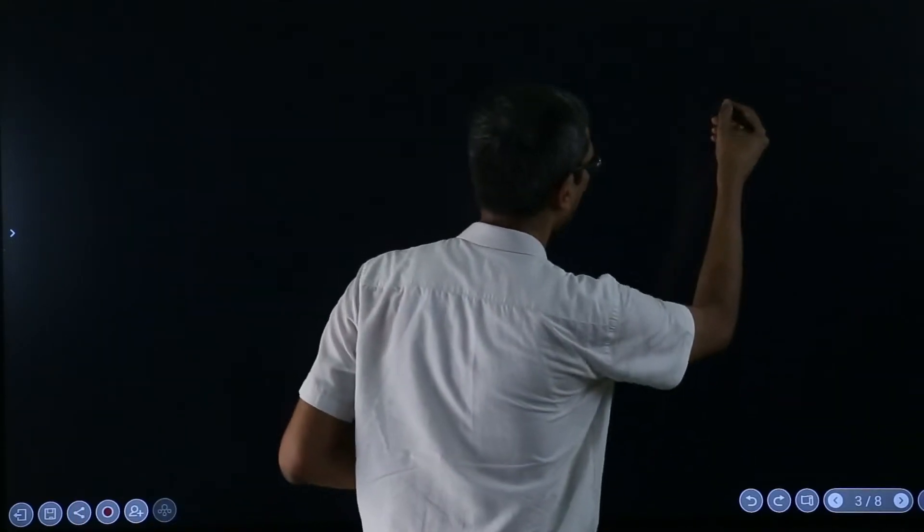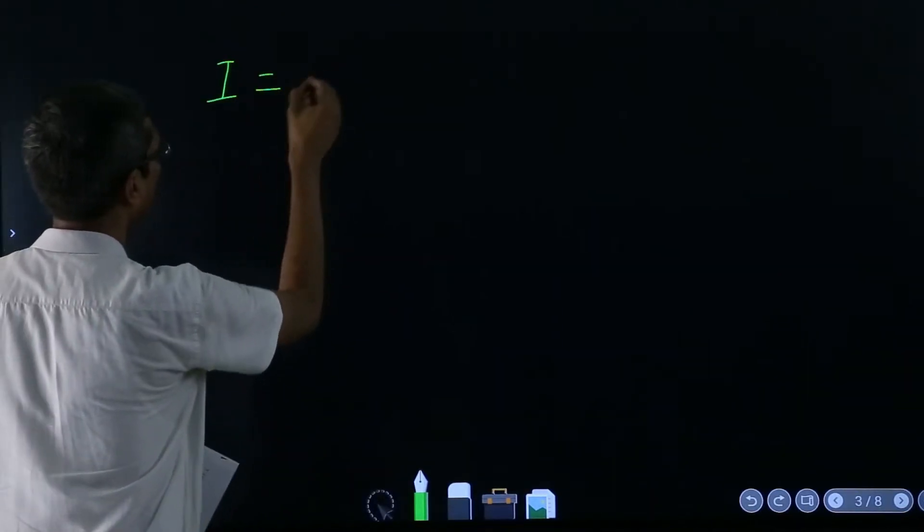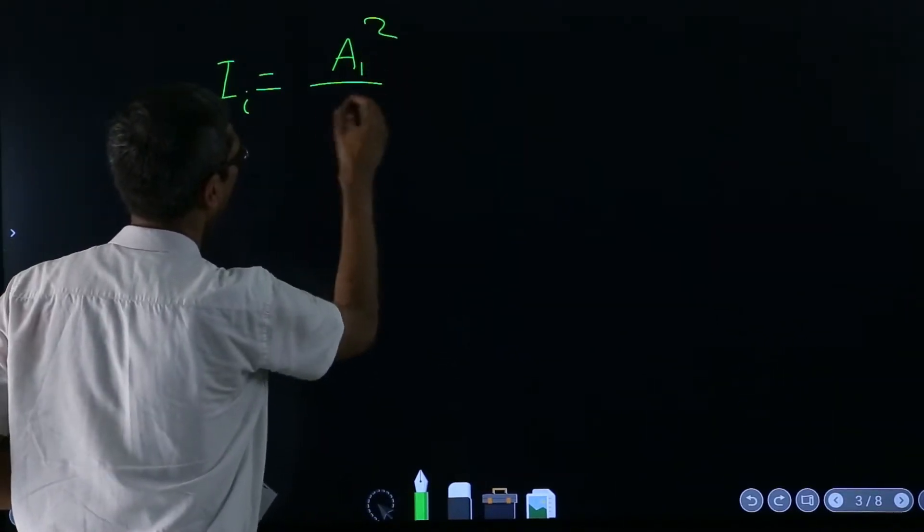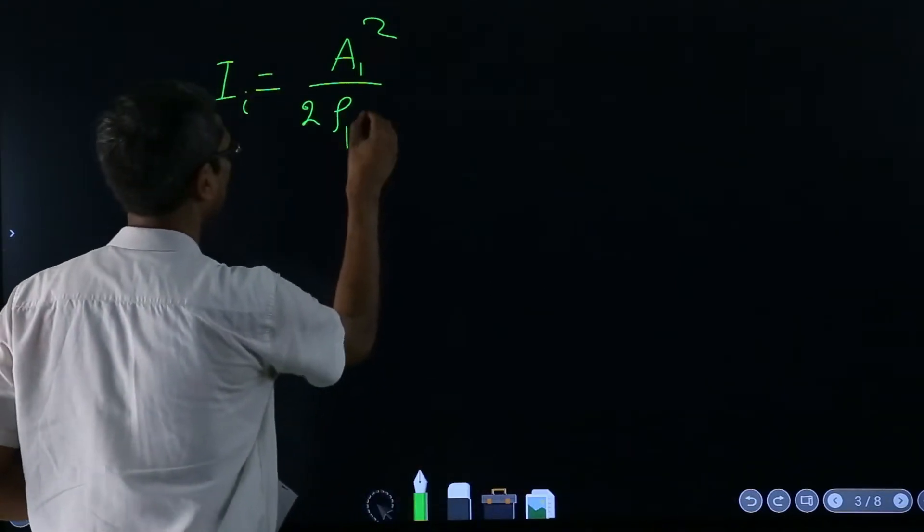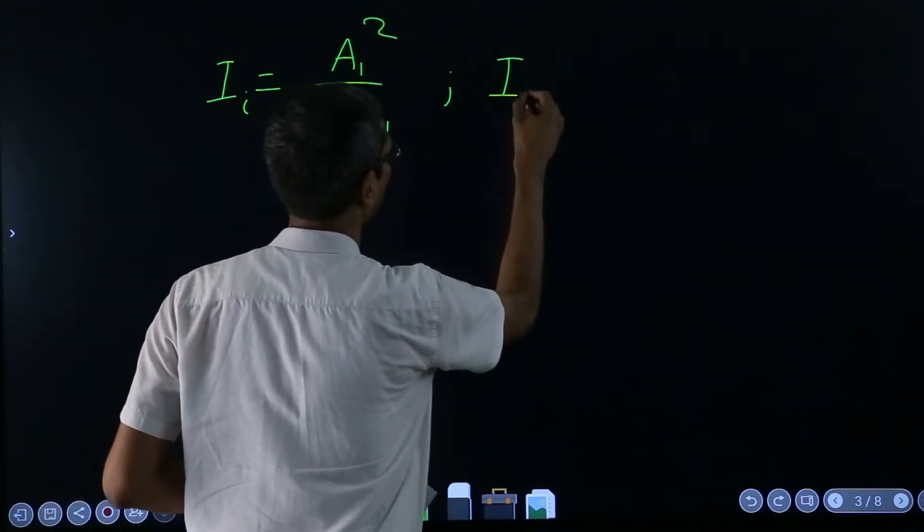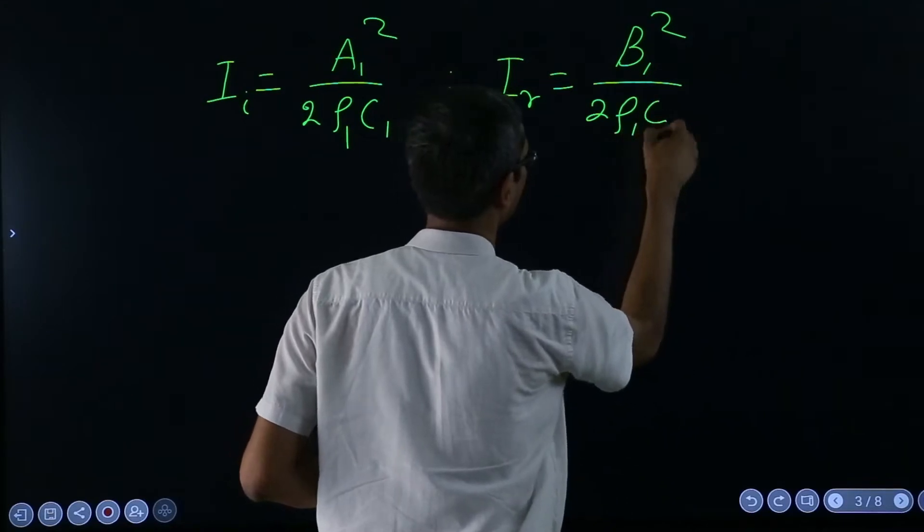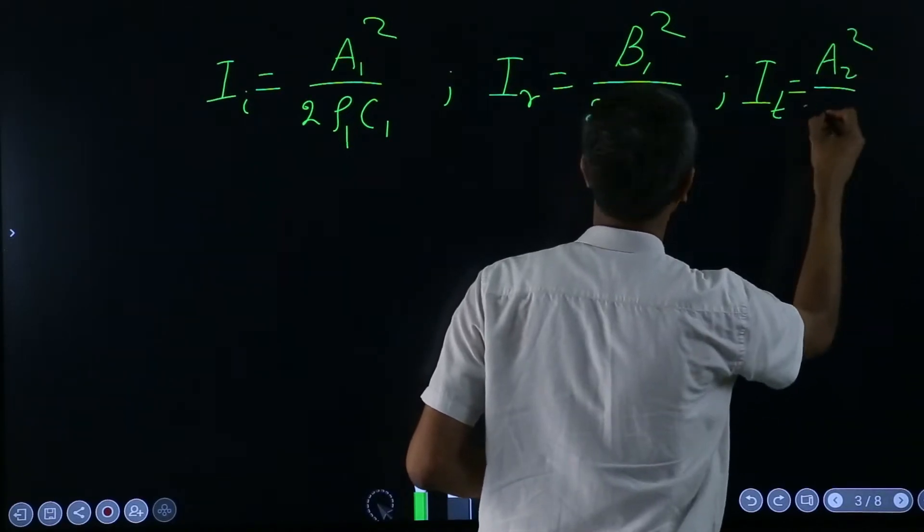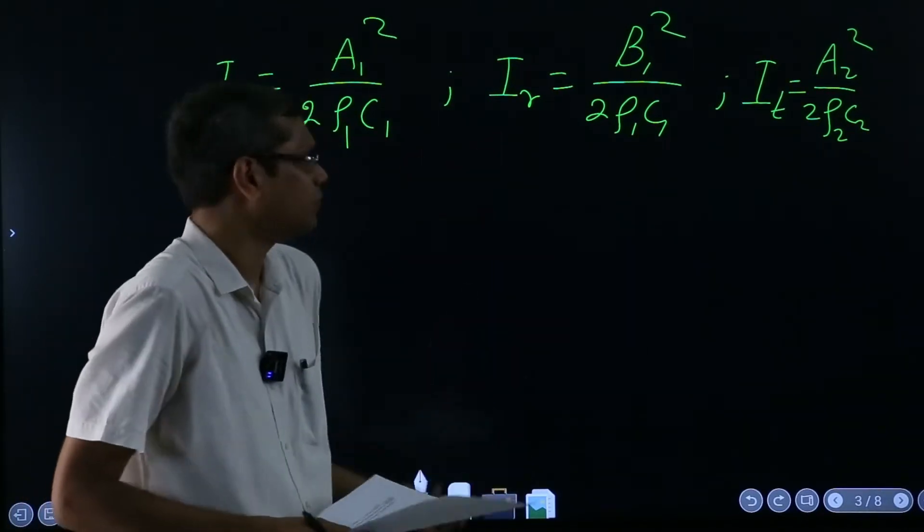And now if we go to the other side, I think last time we also wrote that the intensity of incident wave was a₁² over 2ρ₁c₁, I reflected was b₁² over 2ρ₁c₁, and I transmitted was a₂² over 2ρ₂c₂, right. So that is what from definition basically.